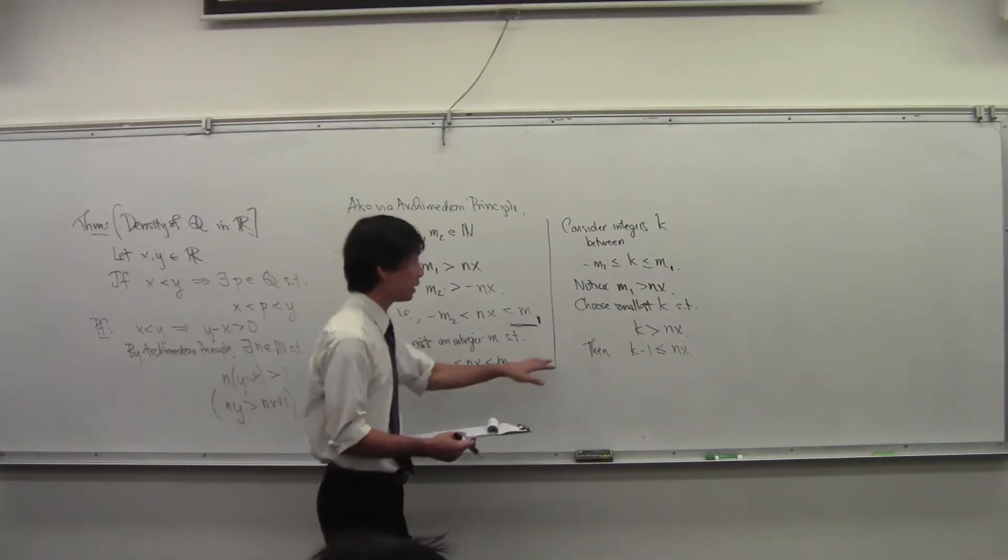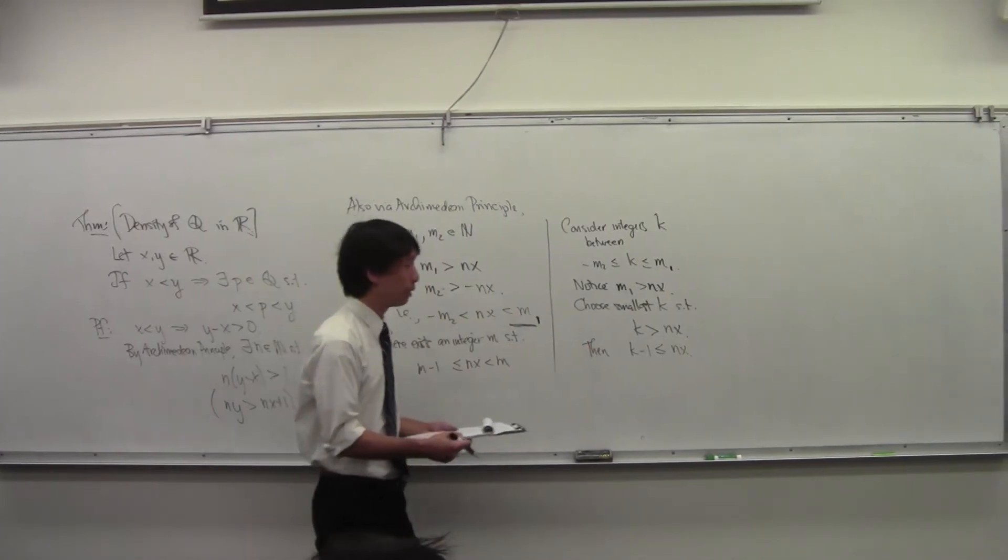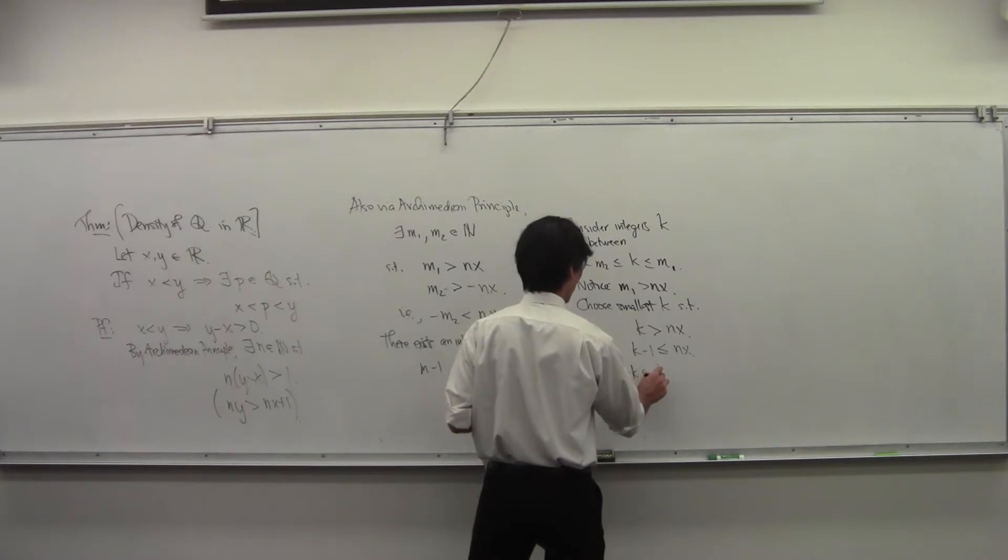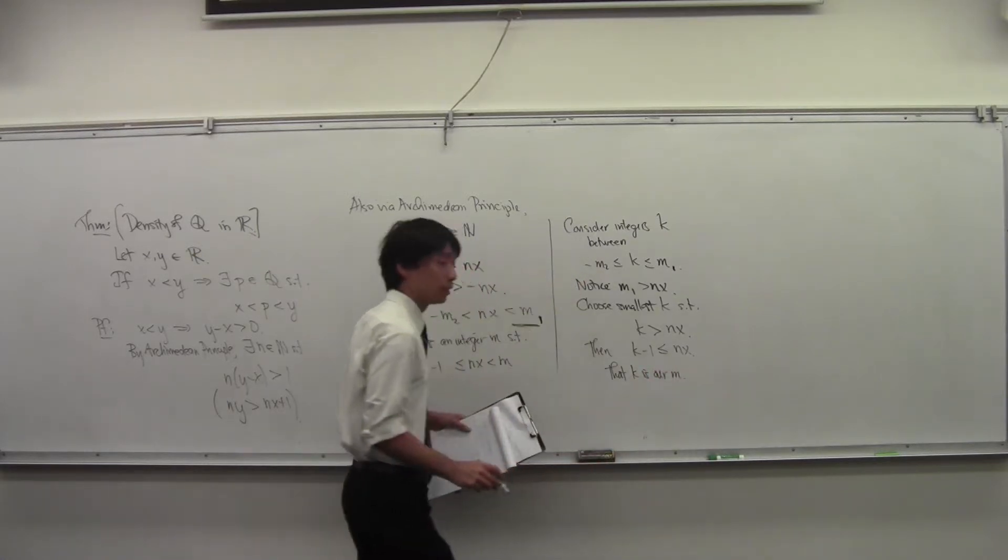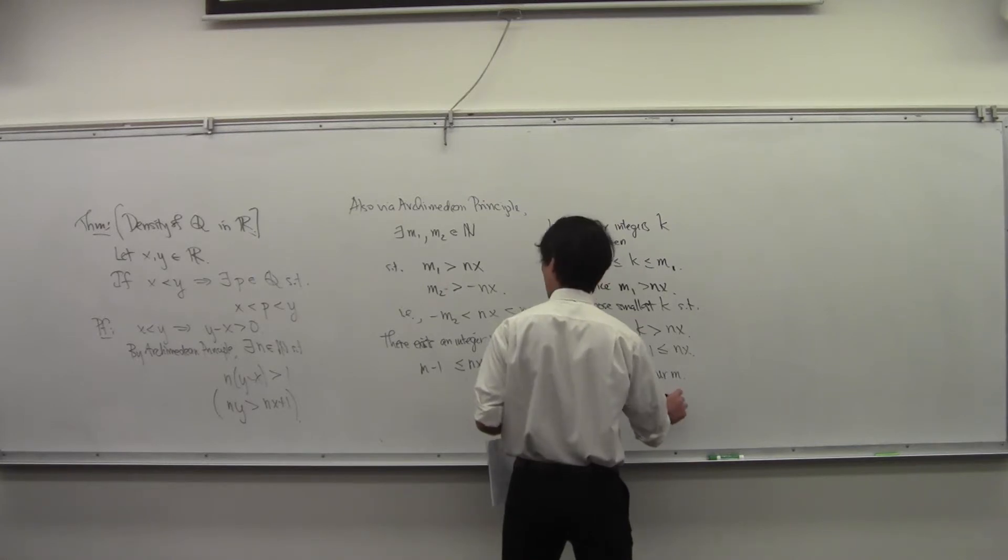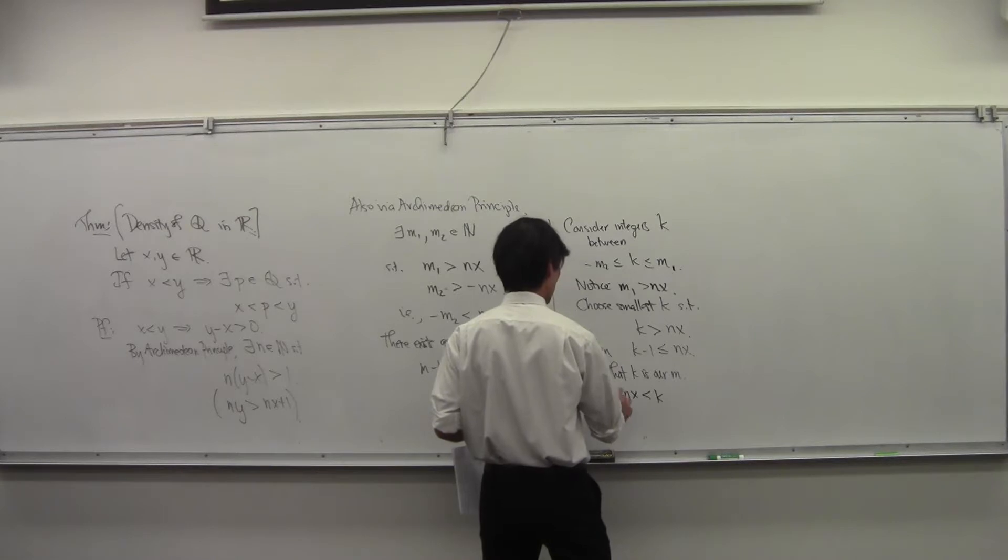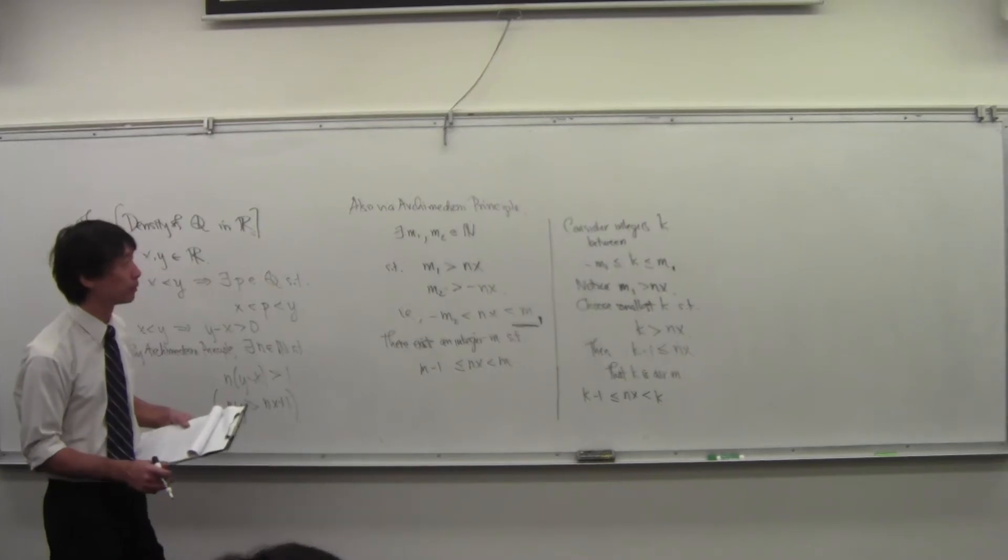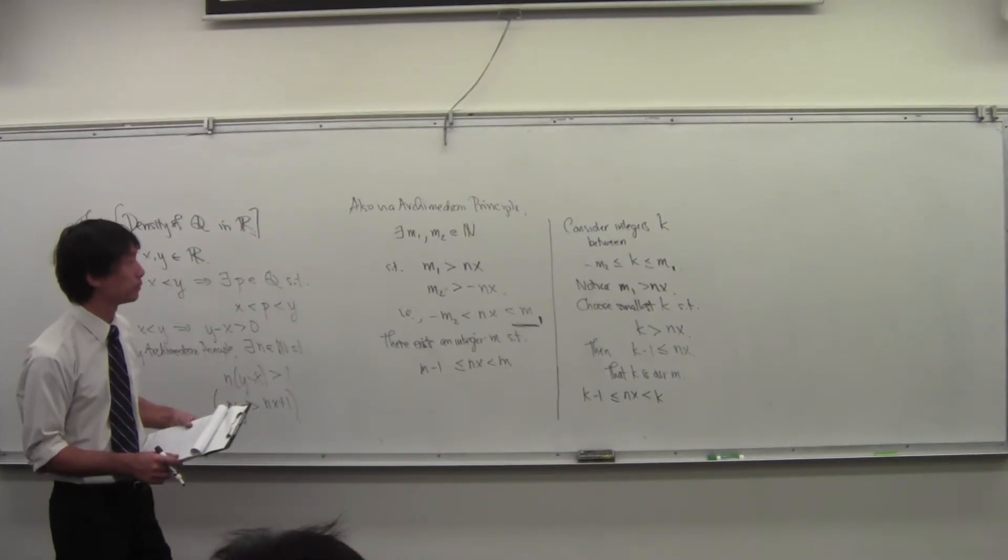So that K is our M. That K is our M, because we have this K and it's bigger than NX, and NX is bigger than K minus 1.